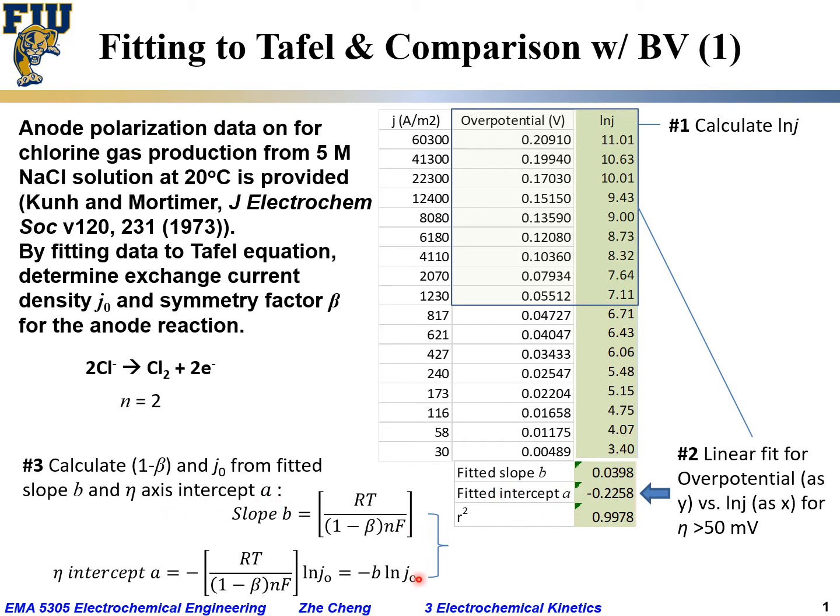For Tafel relation, remember we have shown slope B is essentially RT over 1 minus symmetry factor, times n, number of electrons transferred, times Faraday constant. While the eta, the overpotential intercept A, would be minus this RT over 1 minus beta n F, times natural log of exchange current density.